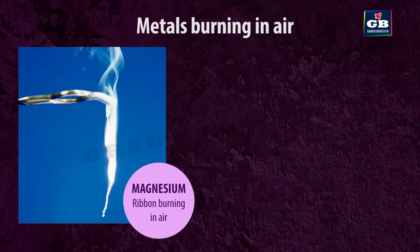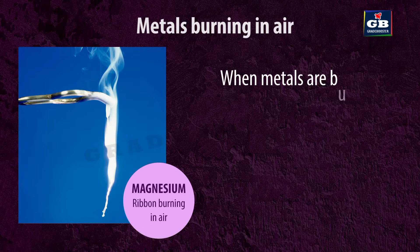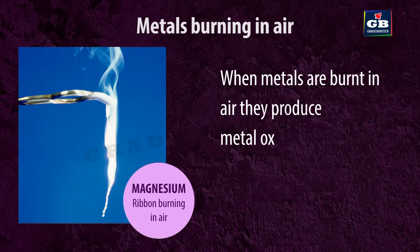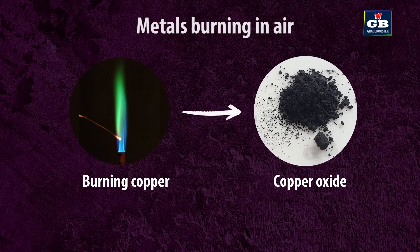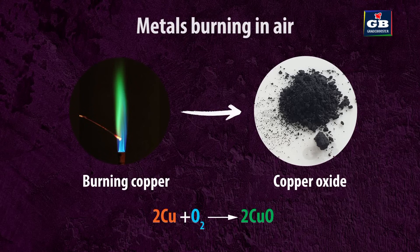Chemical properties of metals. Metals burning in air: when metals are burnt in air, they produce metal oxide. For example, when copper is burnt in air, it produces copper oxide. 2Cu + O₂ → 2CuO.